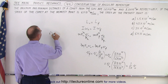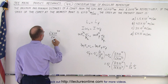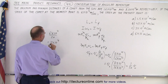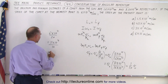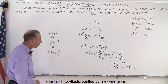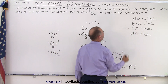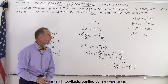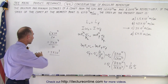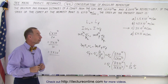So 6 times 10 to the 4th divided by 20 equals 3 times 10 to the 3rd. The answer is C. The comet will be moving at 3 times 10 to the 3rd meters per second when it's farthest away, as opposed to 6 times 10 to the 4th when it's closest — a ratio of 20 to 1.